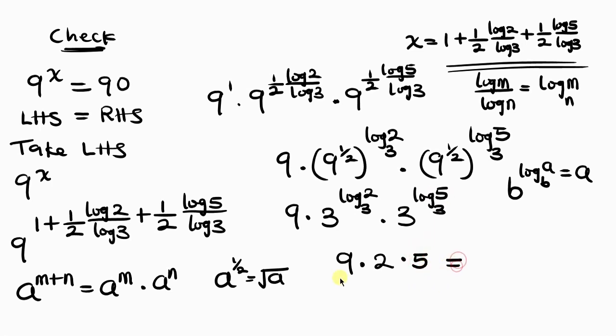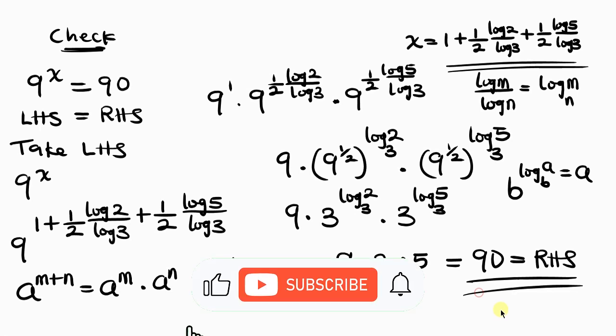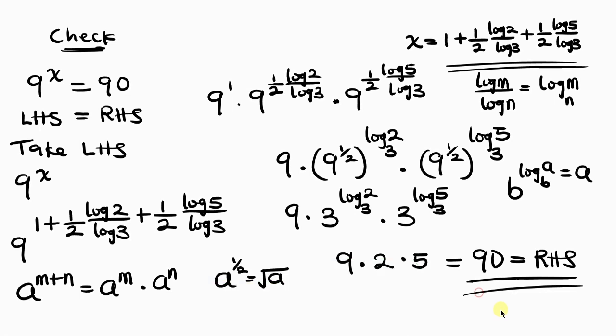Multiplying: 9 times 2 is 18, times 5 is 90. So we see that the left-hand side equals the right-hand side, confirming our result is correct. Feel free to share your ideas in the comment section below. If you enjoyed this video and learned something, give it a thumbs up, subscribe, and turn on the notification bell so you don't miss upcoming videos. Until next time, take care.